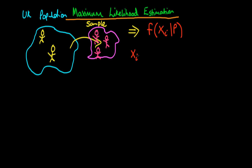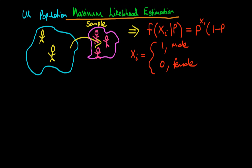So xi here is a dummy variable which is going to take on the value of 1 if an individual is male and 0 if the individual is female. And f is actually going to be given by p to the power xi times 1 minus p to the power 1 minus xi, where p is the probability that an individual is male.